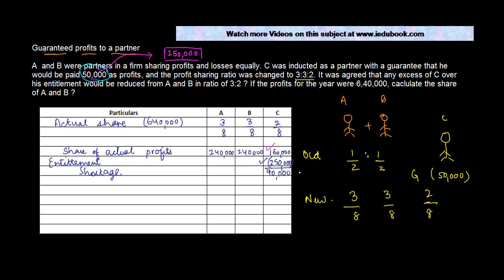C is supposed to get 90,000 more from the firm. It was agreed that any excess of C's entitlement over his actual share would be borne by A and B in the ratio of 3:2. So the shortage of 90,000 has to be borne by A and B in the ratio 3:2. A's share is 3/5 of 90,000 — dividing 90,000 into 5 parts gives 18,000, so A's share is 54,000 and B's share is 2/5 of 90,000, which is 36,000.